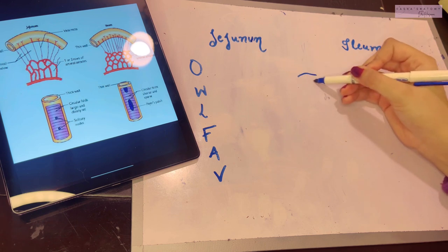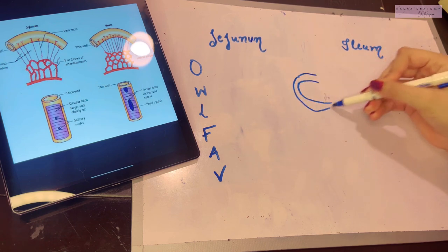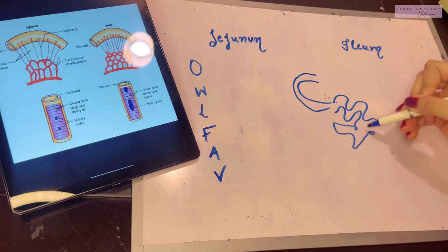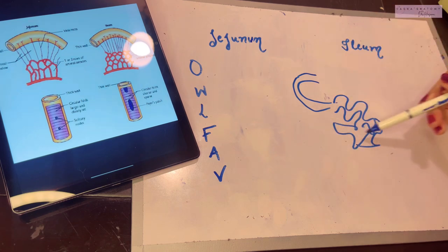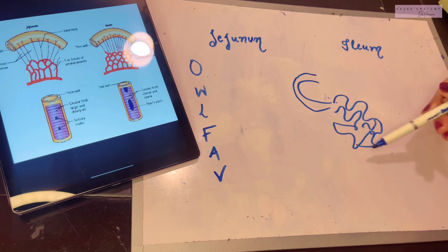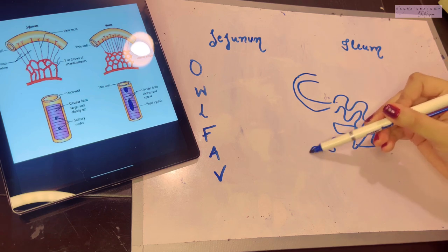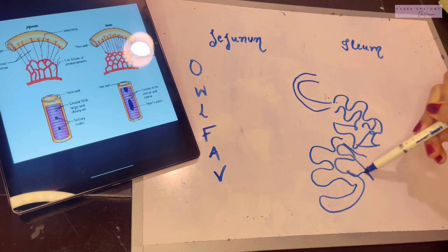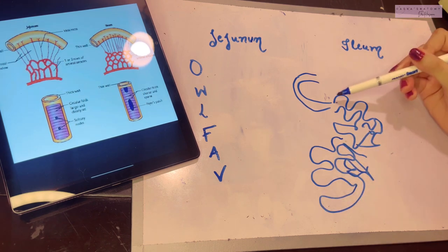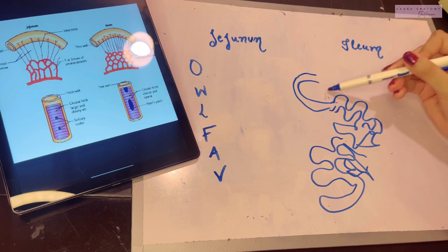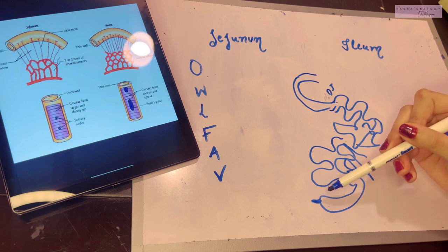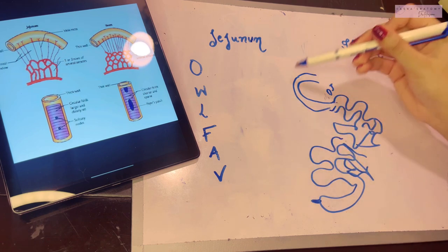The small intestine begins with the duodenum, which is C-shaped, after which the coils begin. The jejunum constitutes the upper two-fifths of the small intestine, whereas the ileum constitutes the lower three-fifths, mostly located towards the right side. The jejunum begins at the duodeno-jejunal flexure, and the ileum ends at the ileocecal junction, after which the large intestine begins.